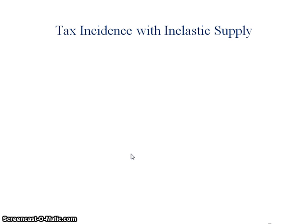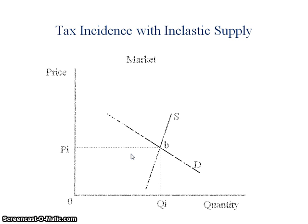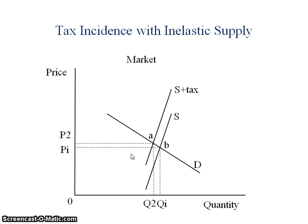Now let's take two more cases. The first case: inelastic supply. I've drawn a nice steeply sloped supply curve. To find the tax, I'm going to shift my supply curve up by the amount of the per unit tax, label my new supply curve S plus tax, find where that tax intersects my demand curve, and establish a new market price and a new market quantity.